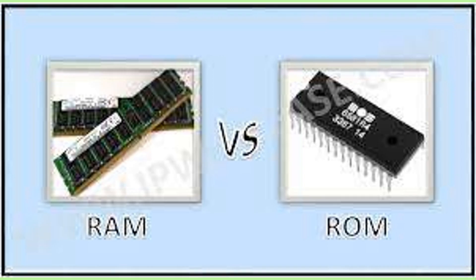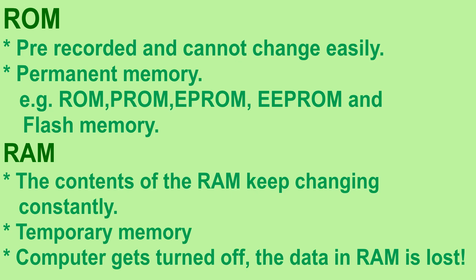Now let's discuss about ROM and RAM. You have learnt about ROM and RAM in the previous classes also. The contents of the ROM are pre-recorded and cannot be changed easily. That is why it is called the permanent memory.